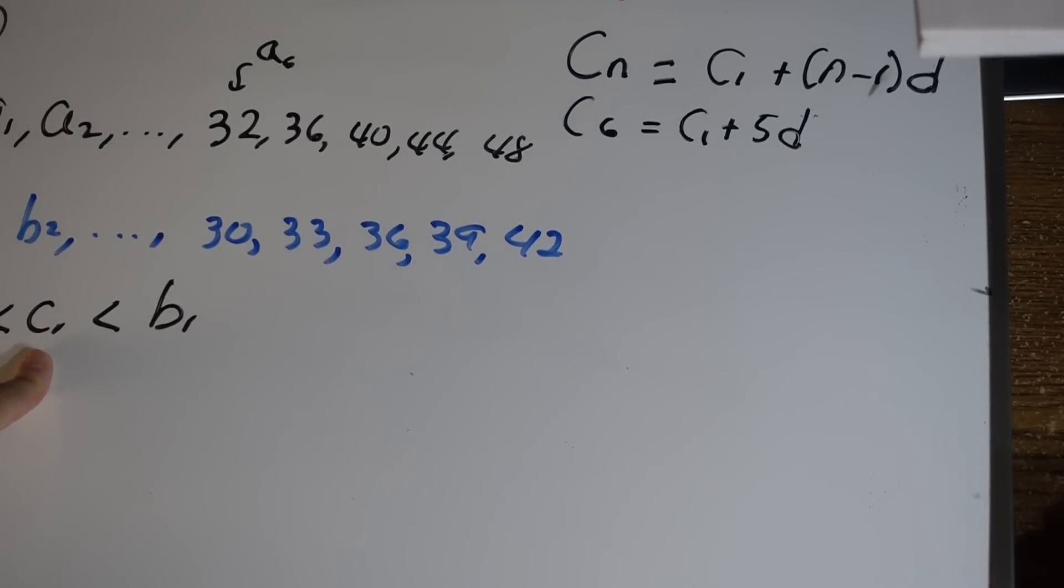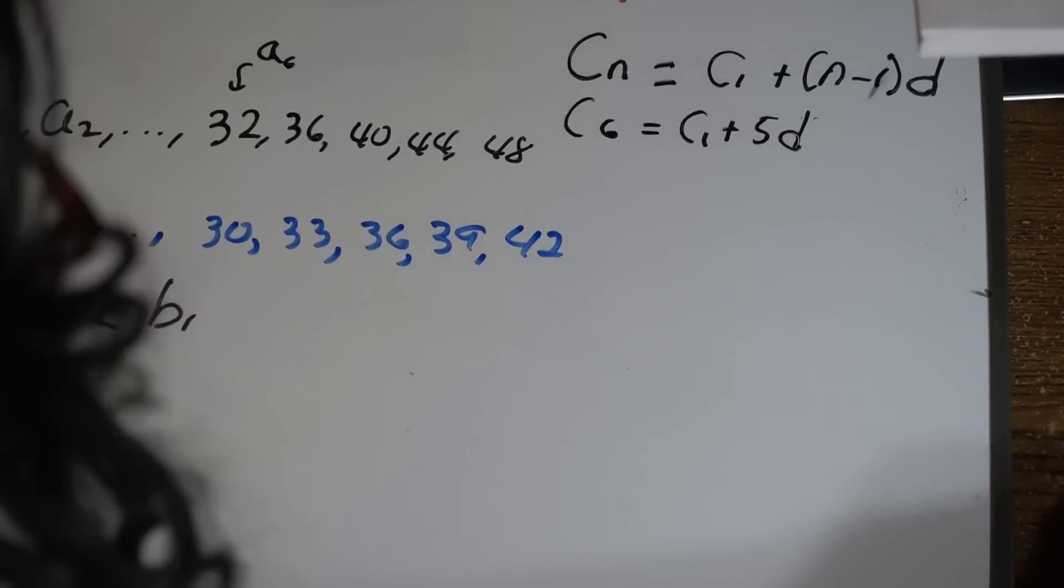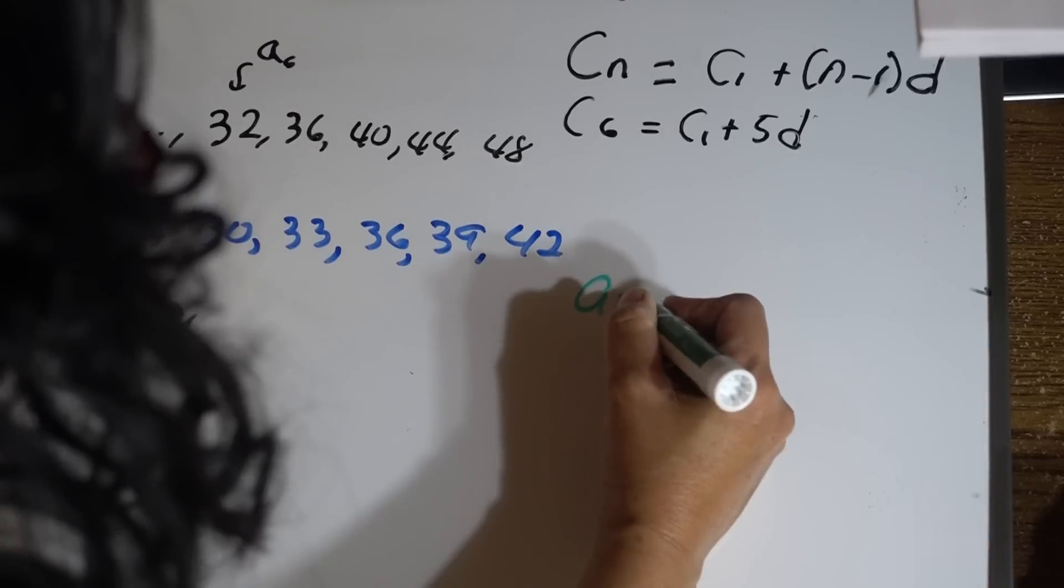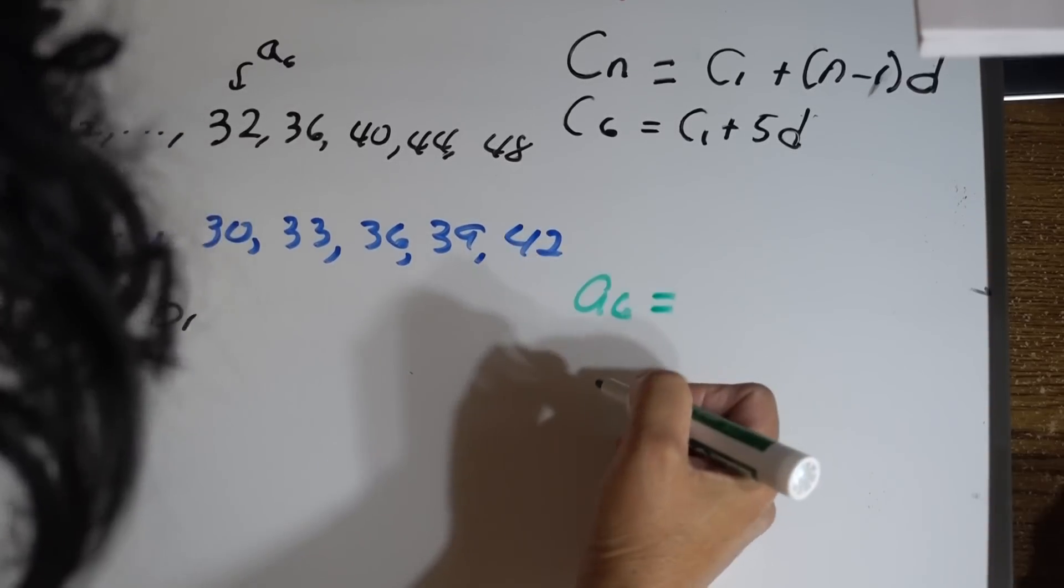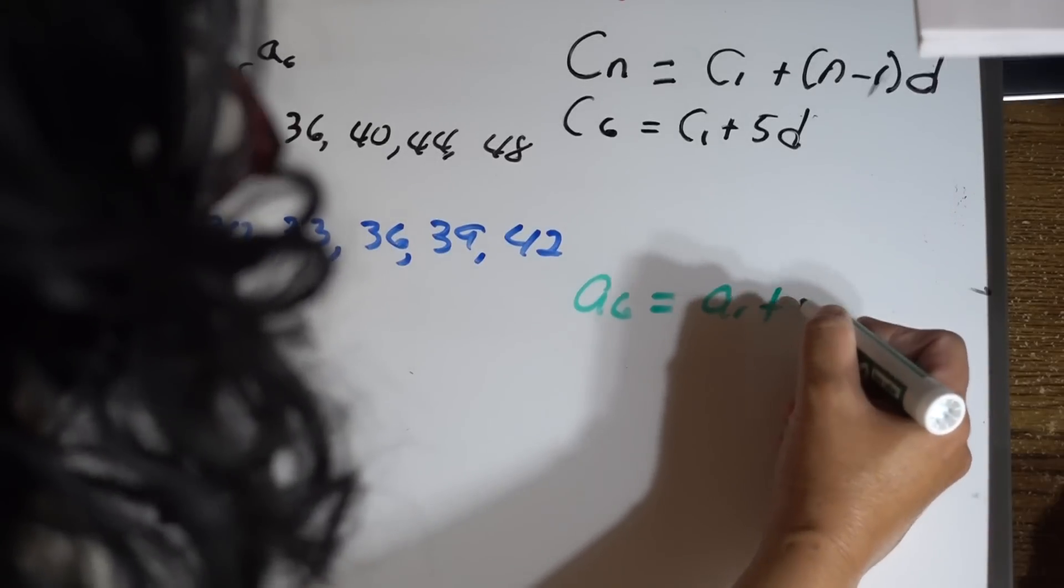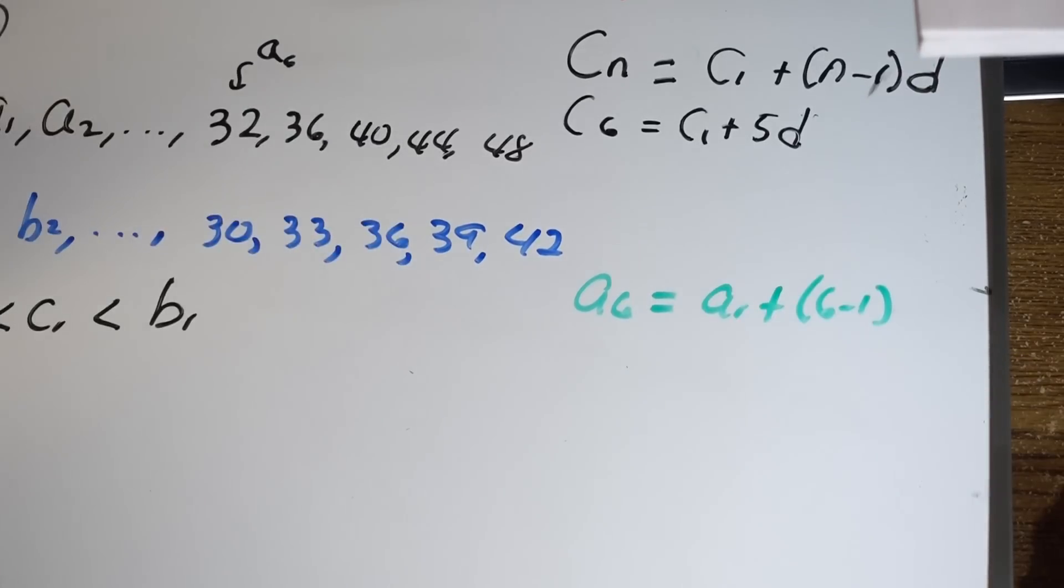In order to find a_1, we're going to use the same formula here for c_6. For a_6, using the formula, a_6 is equals to a_1, that's what we're looking for, plus 6 minus 1 times the difference.